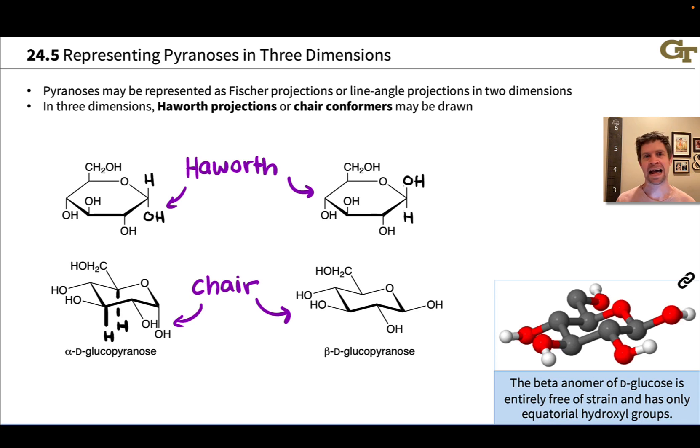They're more akin to the actual three-dimensional shapes of the molecules. And the chair conformers have axial and equatorial groups, just like you've already seen in organic chemistry 1. So the one thing about pyranose chairs that's worth noting is that they contain an oxygen within the ring where a cyclohexane would contain a CH2 or just a carbon. And that oxygen has some subtle effects that we'll touch on a little bit when we talk about the anomeric effect, but nothing too profound for our purposes.